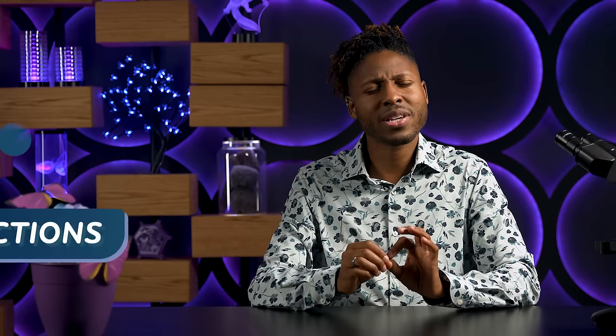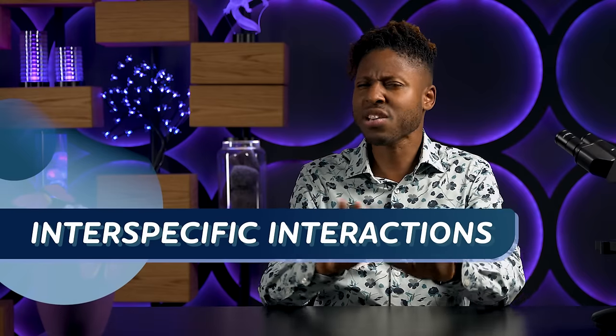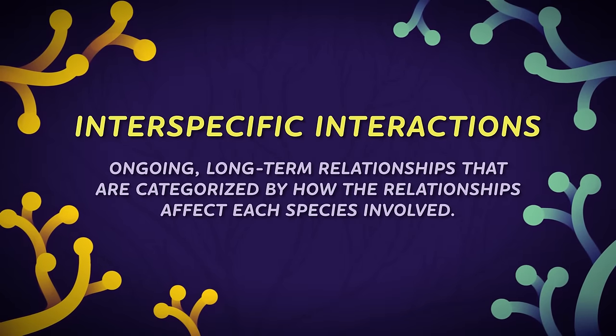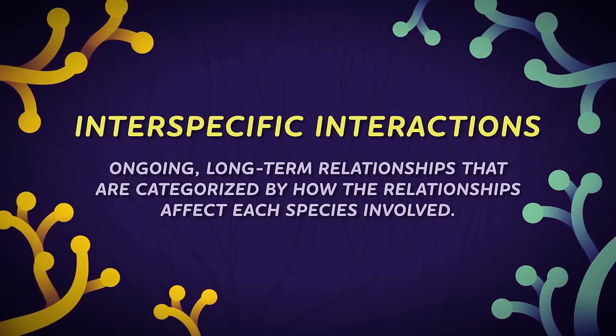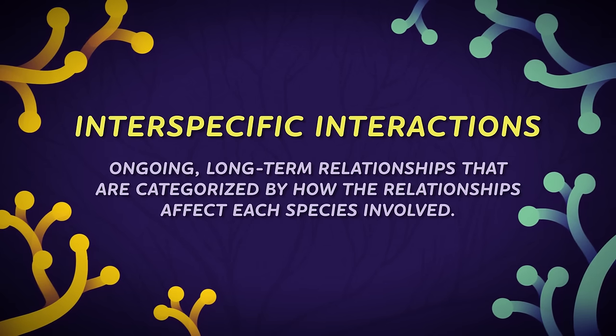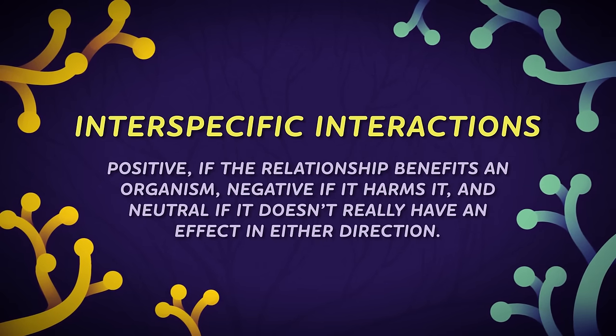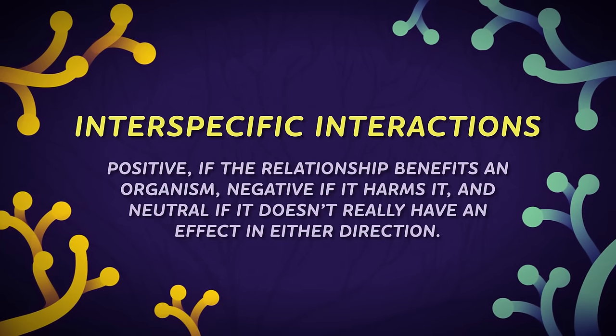But let's move away from cataclysms and talk about life on an ordinary day in a community, where members of different species are frequently connecting through what's called interspecific interactions. These aren't just one-off random encounters, like when you're riding your bike really fast and you accidentally swallow a fly. Instead, with interspecific interactions, we're talking about ongoing, long-term relationships that are categorized by how the relationships affect each species involved: positive, if the relationship benefits an organism; negative, if it harms it; and neutral, if it doesn't really have an effect in either direction.